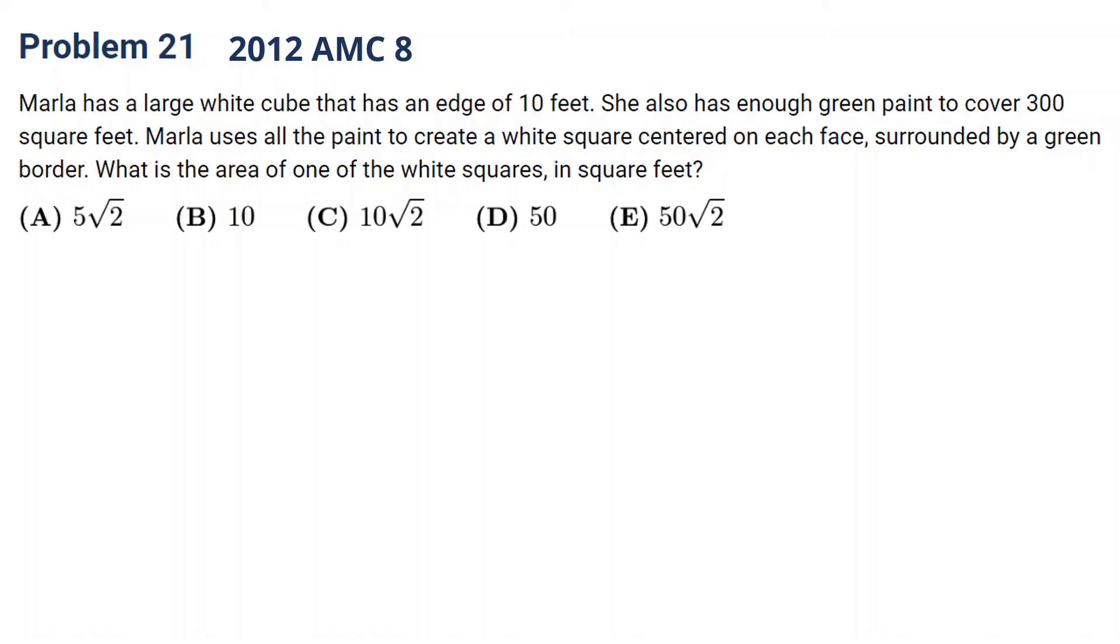Okay, let's come back. We have a large white cube that has each edge of 10. So let's draw a cube. Each side is 10. She also has enough green paint to cover 300 square feet and uses all the paint to create a white square centered on each face. A white square center is white surrounded by green border. So these are green. What's the area of one of the white squares?